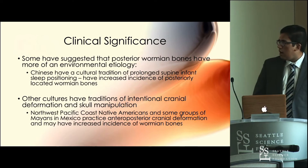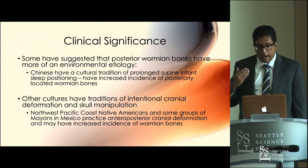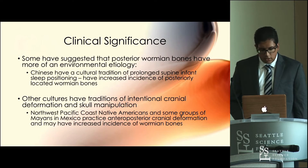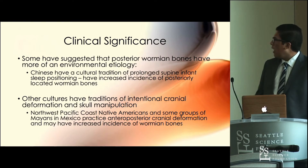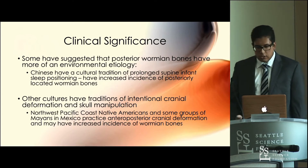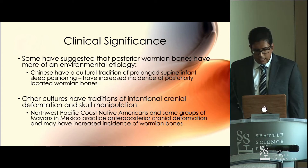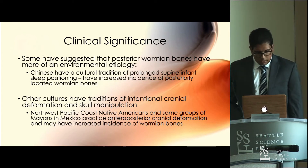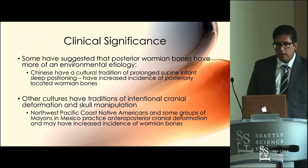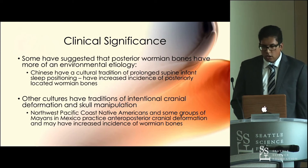Some specific environmental causes include prolonged supine infant sleep positioning, which is a tradition in some Chinese cultures, and reports have shown these children have an increased incidence of wormian bones. Other cultures practice intentional cranial deformation and skull manipulation — specifically populations of Northwest Pacific Coast Native Americans and some groups of Mayans in Mexico — and they've also been shown to have increased incidence of skull deformations.